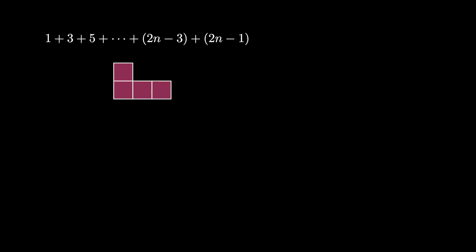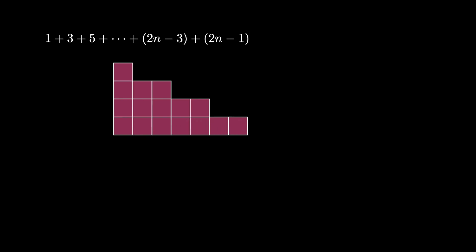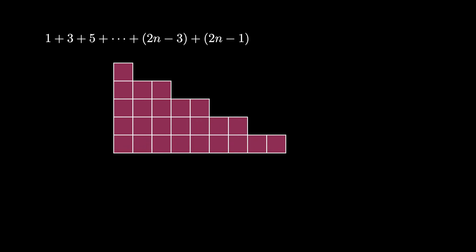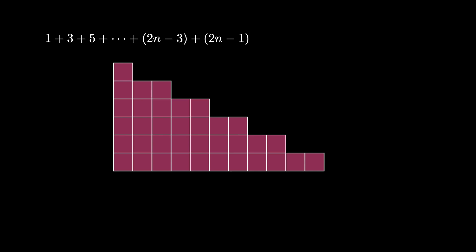minus 1 can be represented by an array of 1 by 1 squares like this, where the first row has 1 square, the second row has 3 squares, and so on, all the way down until the very last row, which has 2n minus 1 squares.